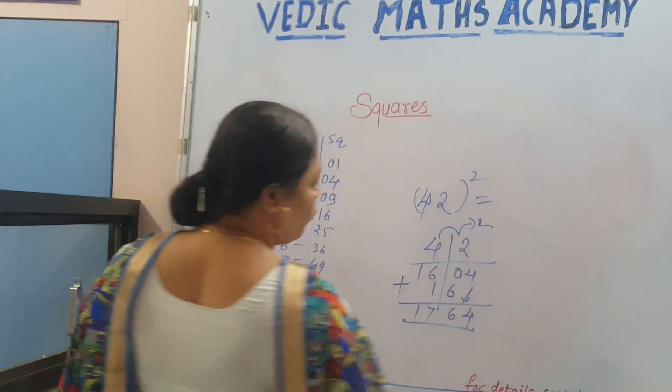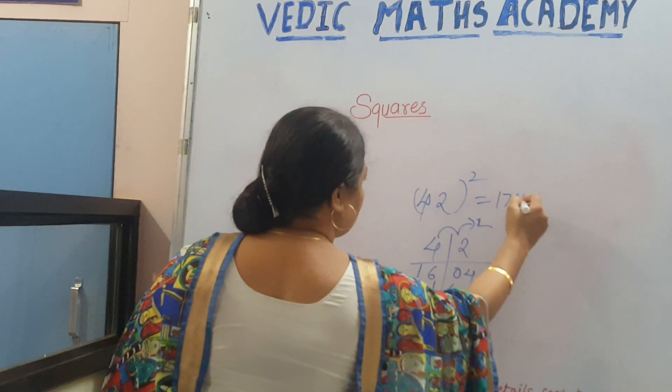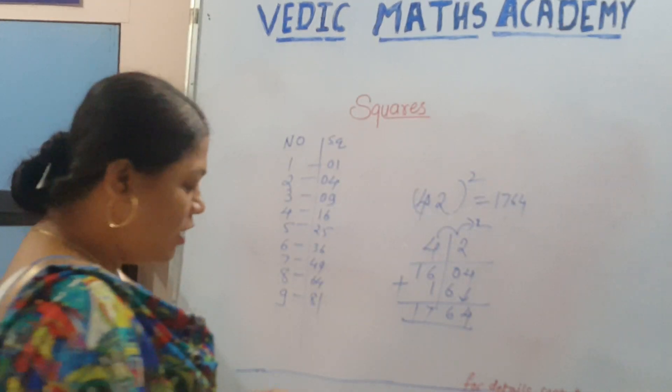What is the square of 42? The answer is 1764. Isn't it matchable?